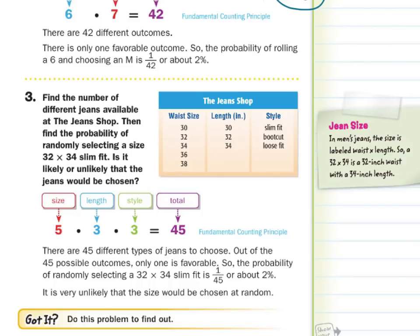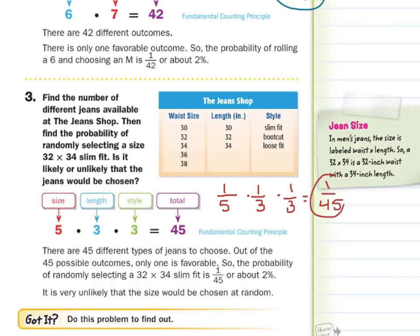I also want to show the other way of calculating this. If you're looking for the waist size of 32, there is a 1 out of 5 chance of choosing that. For the length of 34, there's only a 1 out of 3 chance. And for slim fit, there's still only a 1 out of 3 chance. If you multiply those three fractions together — 1/5 times 1/3 times 1/3 — you also get 1/45, which is another way of calculating probability.